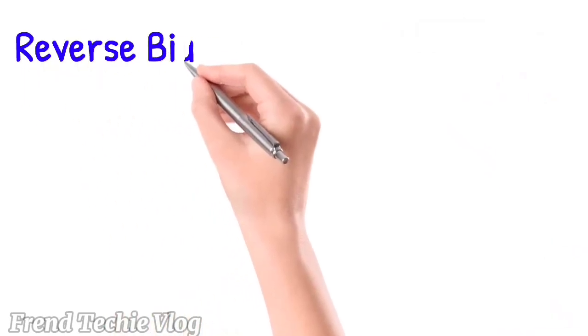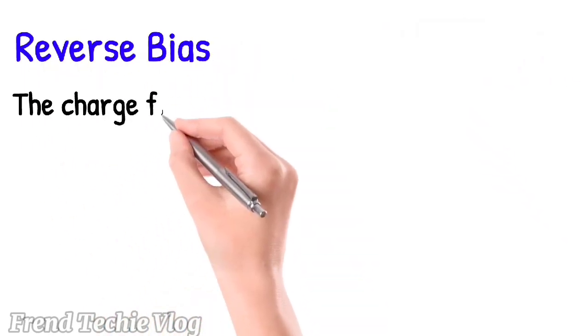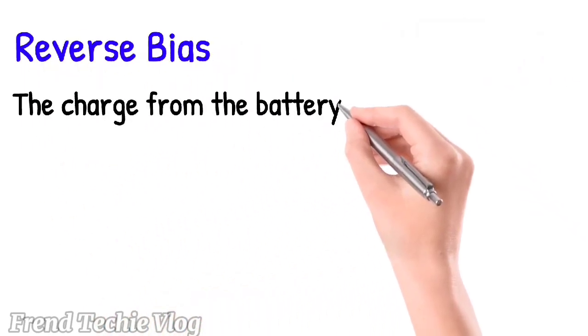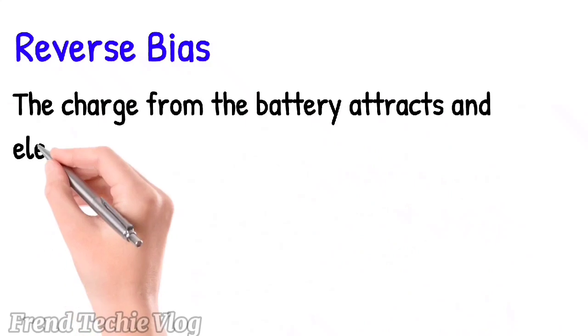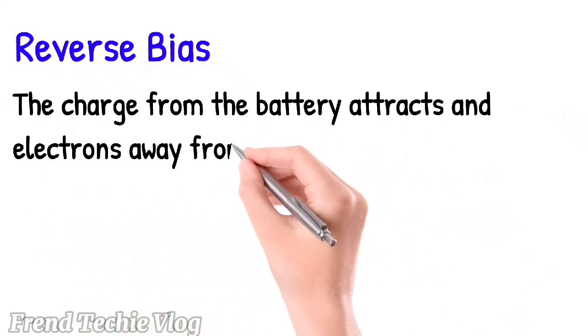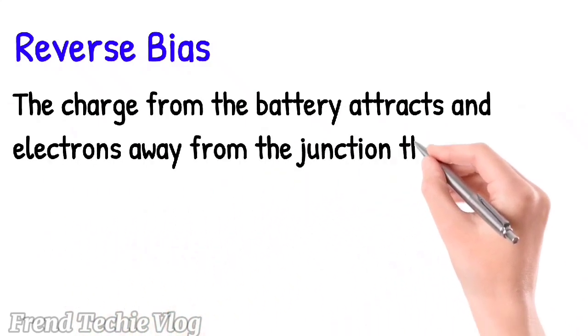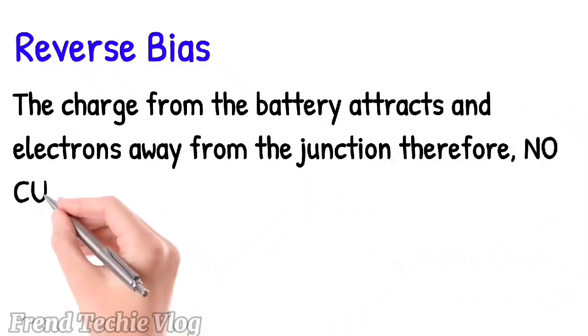Reverse bias: The charge from the battery attracts holes and electrons away from the junction; therefore, no current flows.